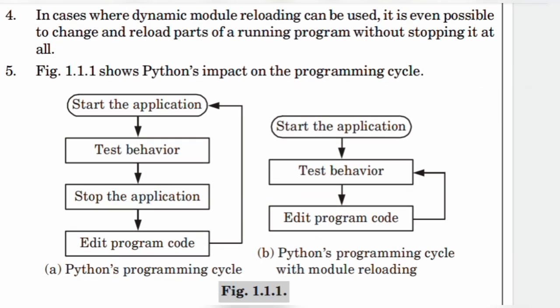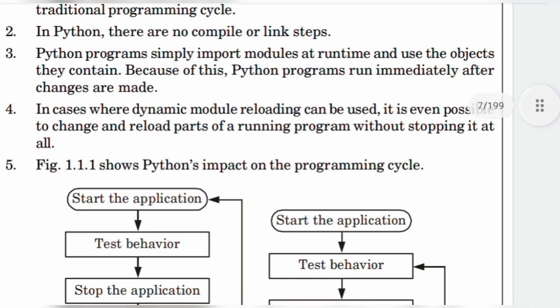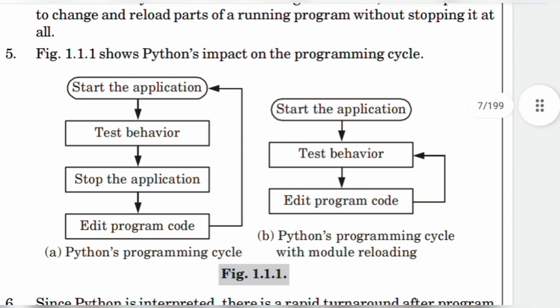In the traditional cycle, you start the application, then test, then stop the application, and then edit the program. But in the Python programming cycle with module reloading, you start the application, then test, then edit the program code. As you can see, there is no need for a compile or link step, and no need to stop the application.